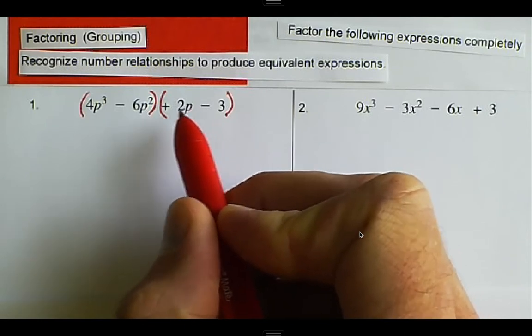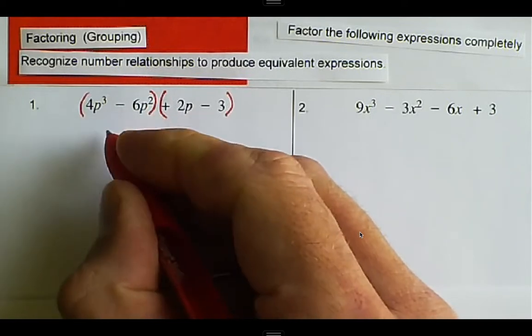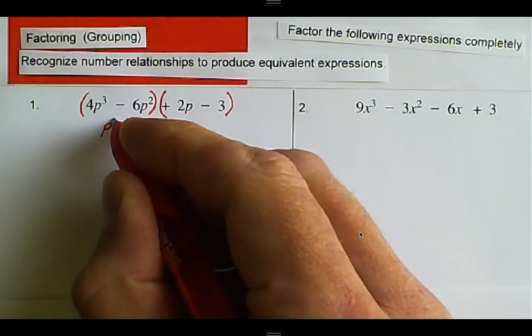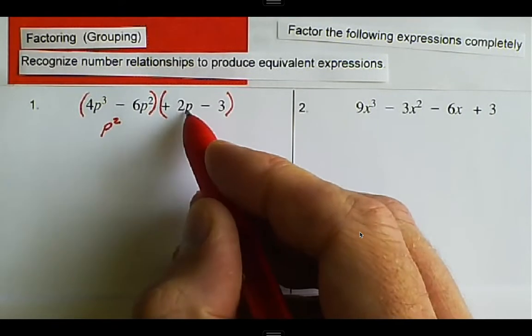So there's one P here. How many Ps do we have to take out in order to leave one left? We're going to take two Ps out. So if we take two Ps out, then our variable will match.